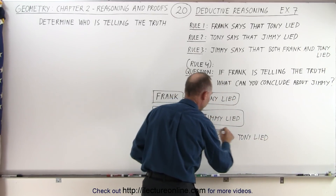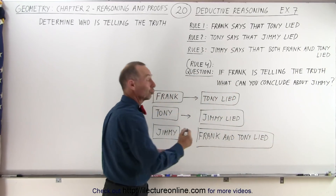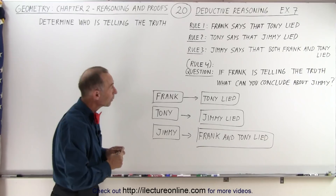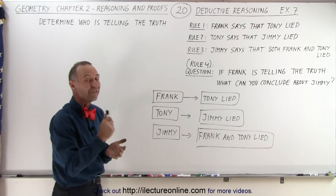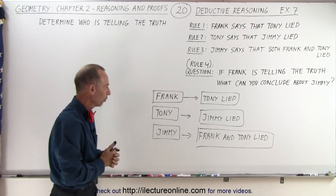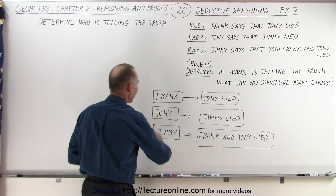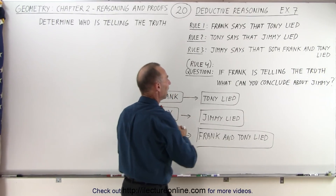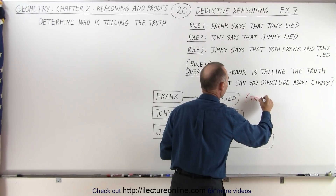At this point, we still don't know which of these statements are true. But now we're given — call it rule number four — if Frank is telling the truth. So what we're going to say is: Frank claims that Tony lied, and that must therefore be true.